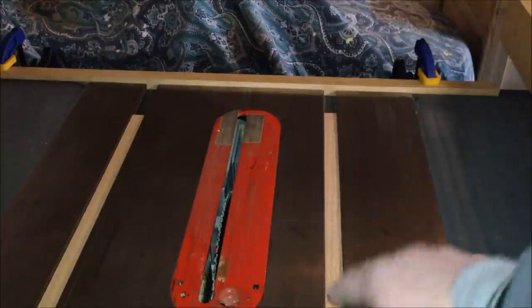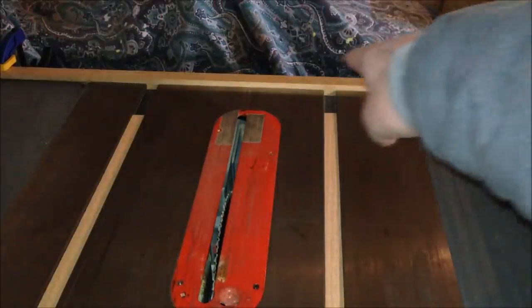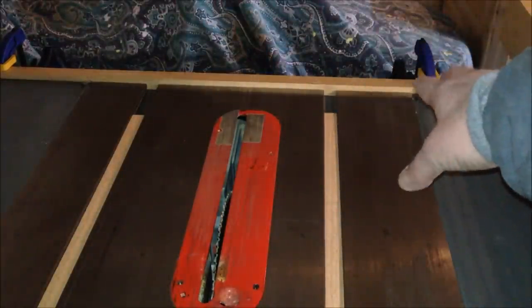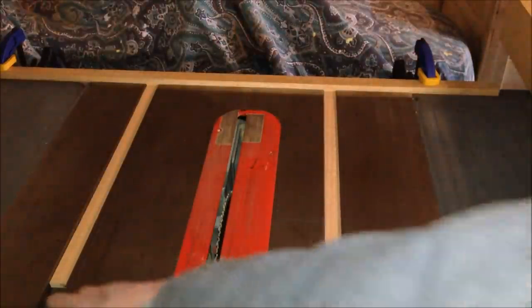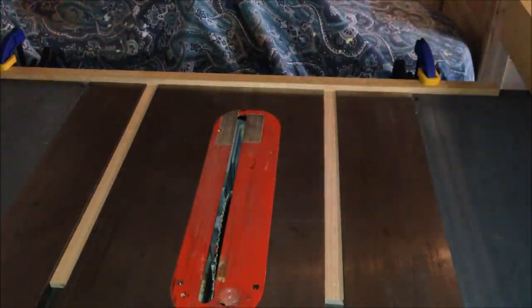So that I can line my runners up with the edge of my sled, I went ahead and mounted this piece of oak to the back of my table. Now I can push my runners all the way up against the piece of oak and then when I get the glue on them, I can push the sled all the way up and guarantee that my runners are mounted against the edge of my sled.